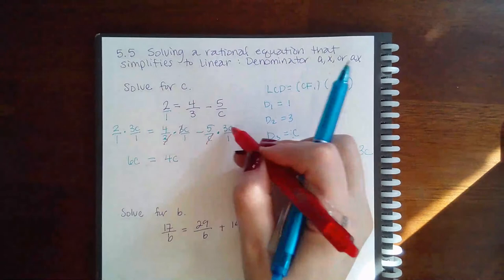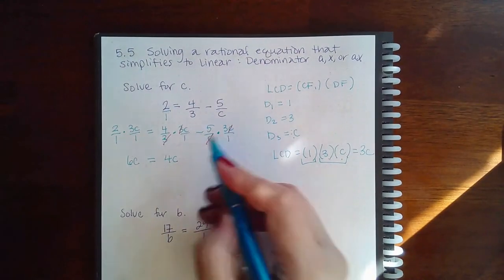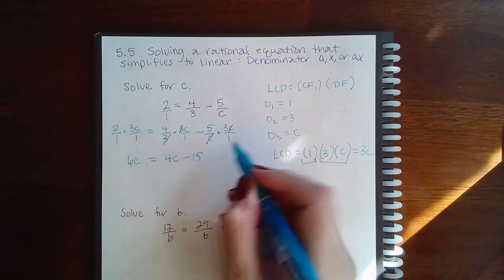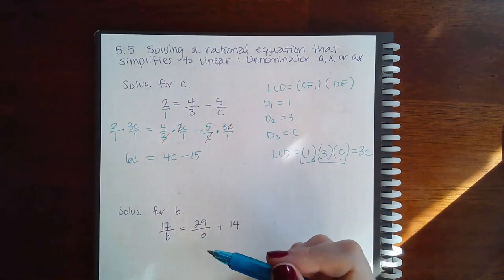Here, the C's will cancel. So, I get negative 5 times 3, which is negative 15. Again, over 1 means there's really no denominator there.